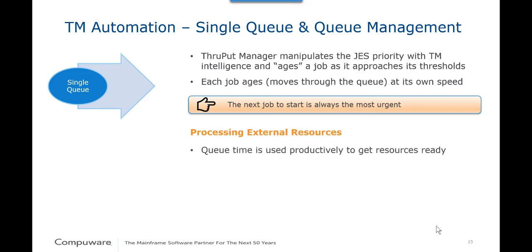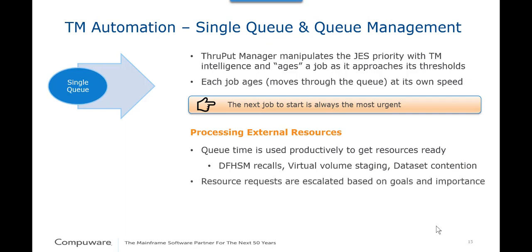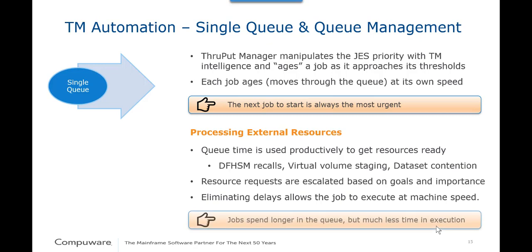Throughput Manager automation also uses the queue time to process the job's external resources. Traditionally, the resources for a job are handled after the job is selected for execution. But because SLM is aware of the external resources needed, SLM can ready the job by proactively fetching those resources while waiting to be selected for execution. This means that all HSM recalls and virtual volume staging is done in the queue, as well as dataset contention resolution. Each resource request is also prioritized and escalated based on those service goals and importance, optimizing queue time and allowing jobs to run at machine speed. Jobs may spend a longer time in the queue, but much less time in execution.